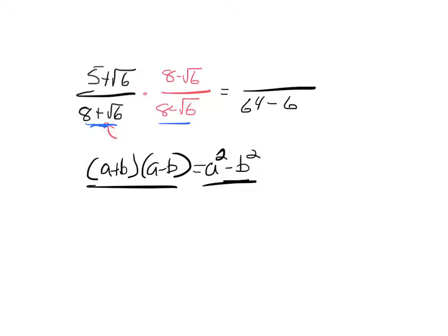And then I also need to foil the numerator. And in foiling that numerator, I multiply the 5 by the 8 to get the 40, and the 5 by the negative square root of 6 to get negative 5 square root of 6.